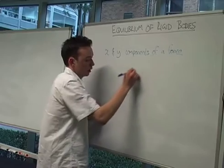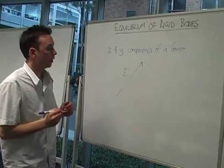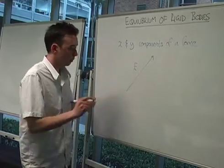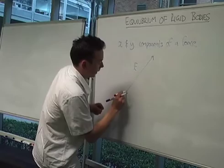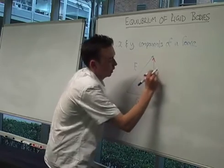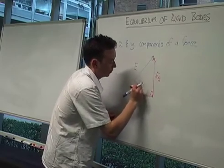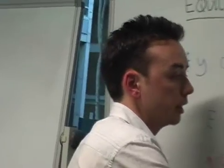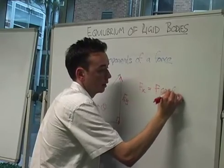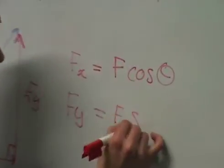For a given force in a certain direction, we can resolve the force into its x and y components. So we have the x component along here and the y component along there. So we've got f_x and f_y, with a known angle here. The magnitude in the x component is simply the force multiplied by cos θ. Similarly for the y component, it equals force times the sine of the angle.